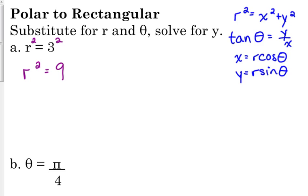Now, we can use that relationship that r squared is equal to x squared plus y squared and just replace r squared with x squared plus y squared and that's equal to 9. That's it. The equation of a circle. Center at the origin, radius of 3.